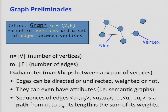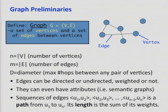Some preliminaries — we're going to stay fairly high level at the algorithmic level. N usually denotes the number of vertices, M is the number of edges, and the diameter of the network or graph is usually the maximum number of hops between any two pairs of vertices. You can have directed or undirected graphs, or weighted or unweighted graphs.